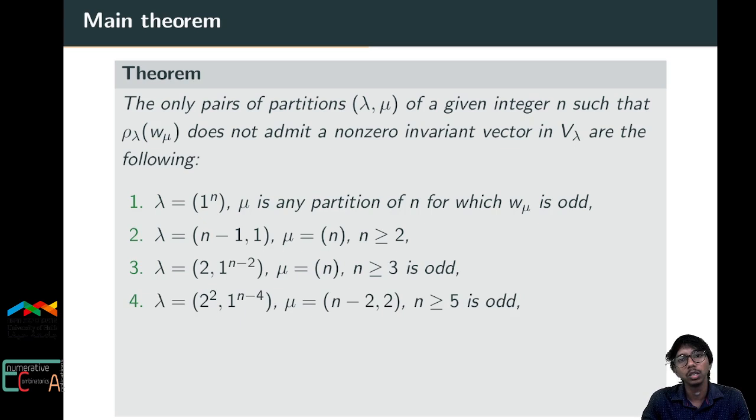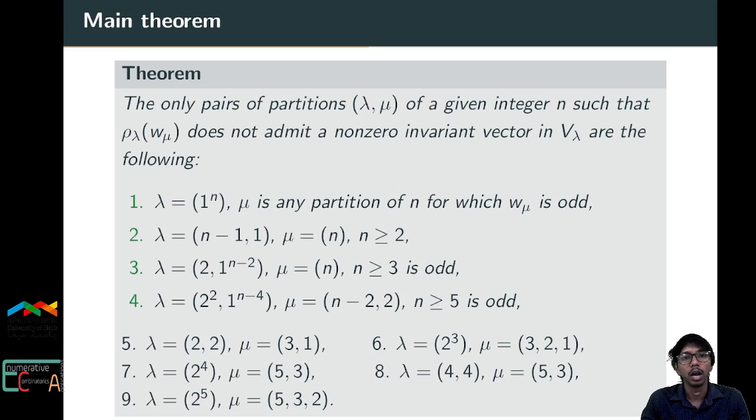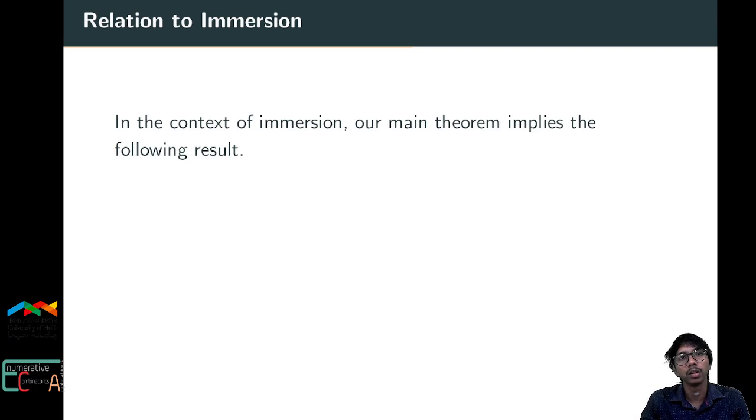The fourth case is slightly non-trivial: λ = (2², 1^{n-4}) and μ = (n-2, 2) with n ≥ 5. This fourth case is proved in a lemma. There are also finitely many additional pairs which can be checked directly, for example using Sage.